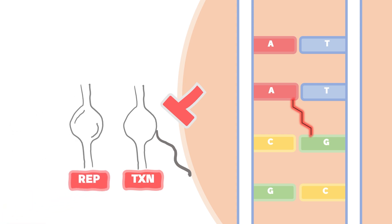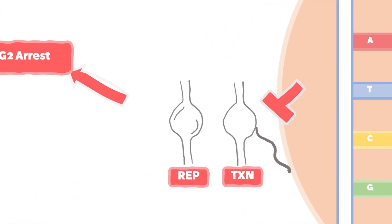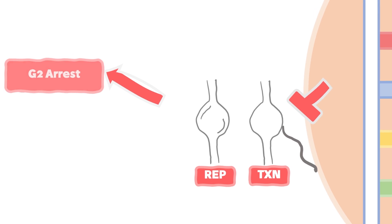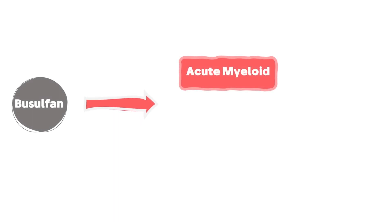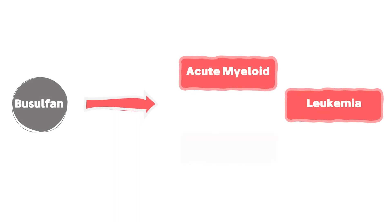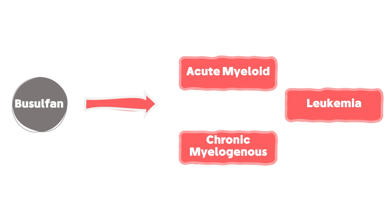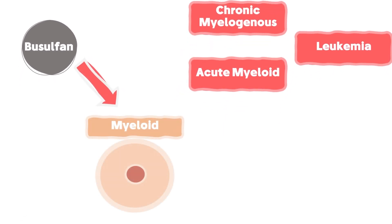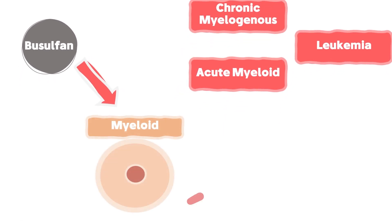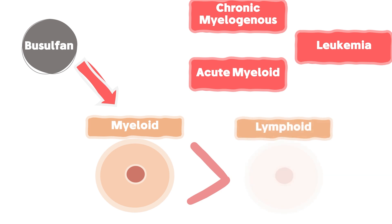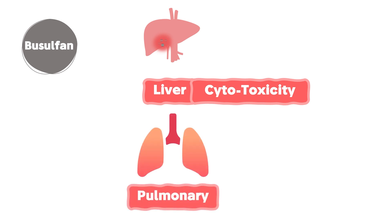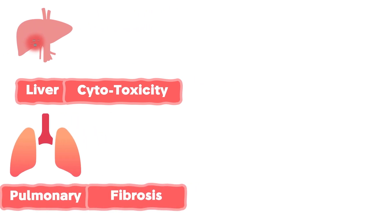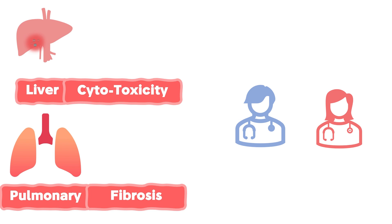Busulfan can lead to either stopping the cell cycle at the G2 phase or inducing apoptosis. Busulfan is used with acute myeloid leukemia and chronic myelogenous leukemia, as it has high specificity towards myeloid cells and less damage to lymphoid cells. However, Busulfan can still cause liver cytotoxicity and pulmonary fibrosis, and any side effects have to be carefully monitored with a physician.